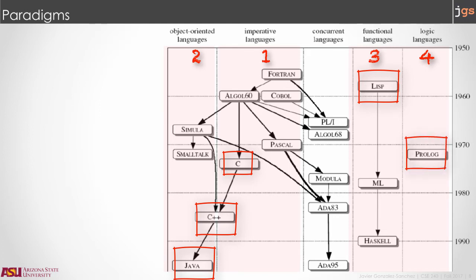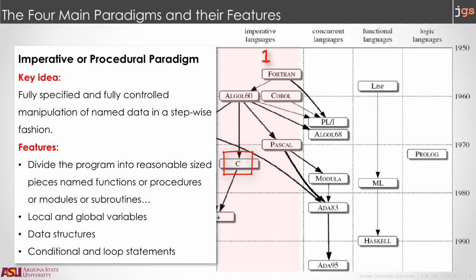A key idea in C and all the other imperative languages, also called procedural languages, is that the program specifies and manipulates data in a stepwise fashion. To do so, key features in these languages are dividing the program into functions or procedures, you know as methods in Java, the use of local and global variables as well as data structures, and the use of conditionals and loop statements.